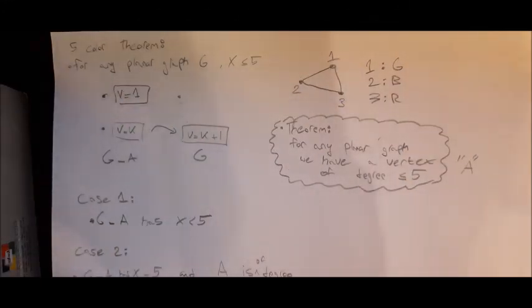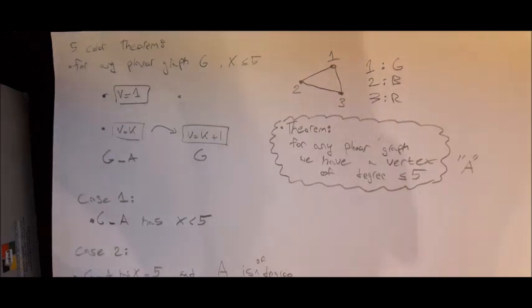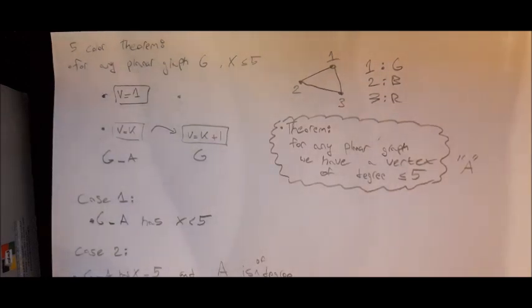Hello guys, today we will be proving the Five Color Theorem. The Five Color Theorem basically says that for any planar graph G, we have a chromatic number of at most five. The chromatic number indicates how many colors you need at least to color the graph.